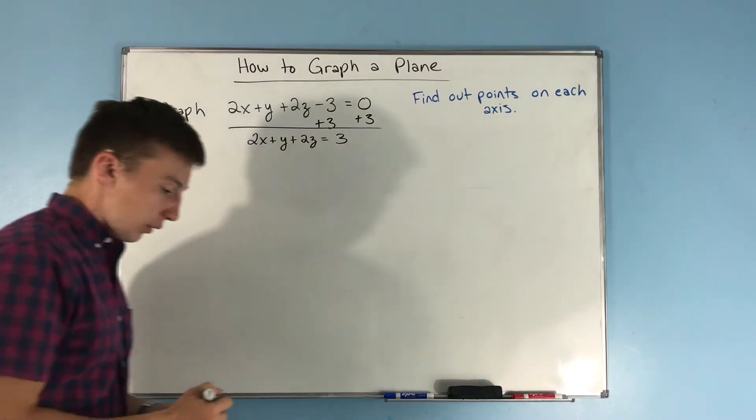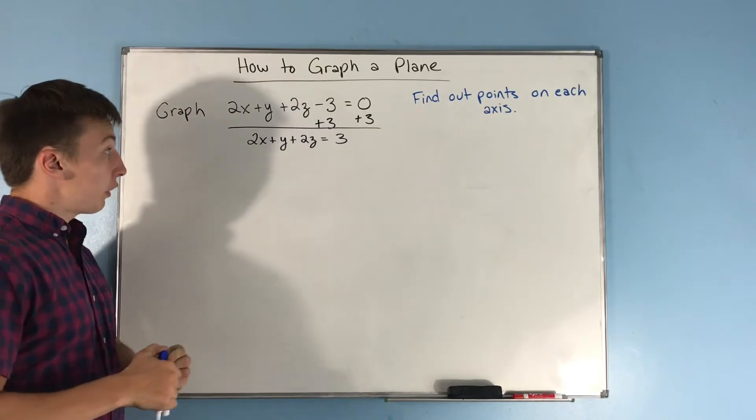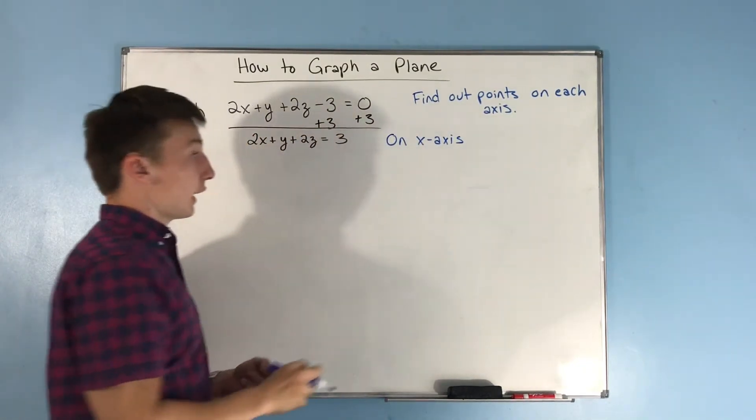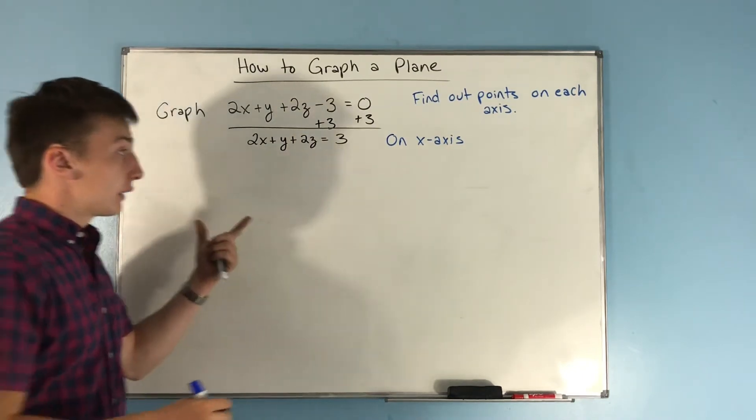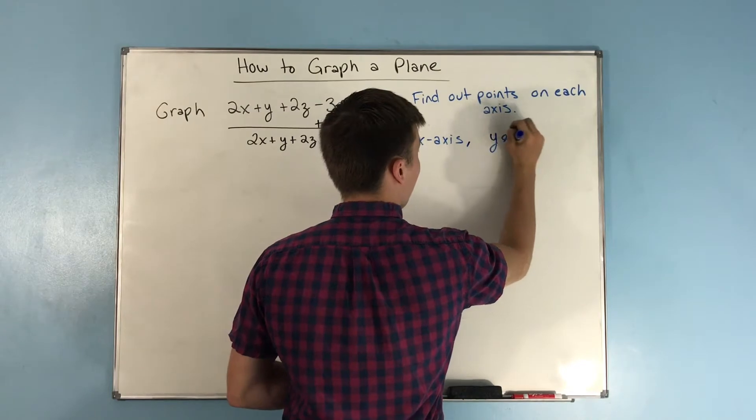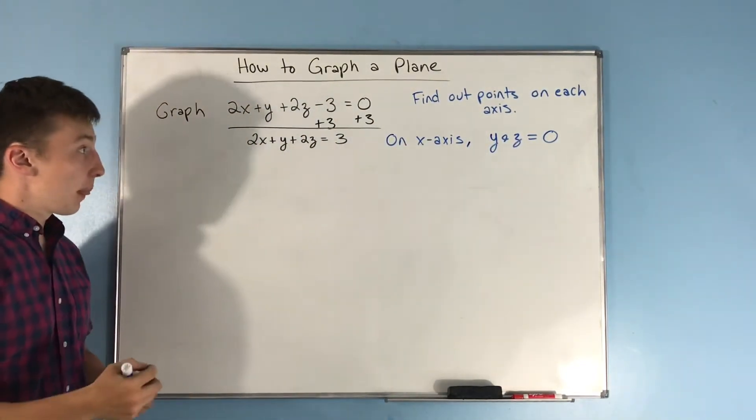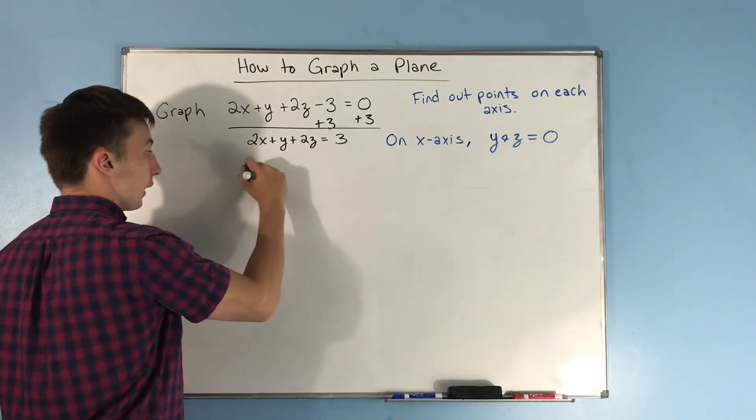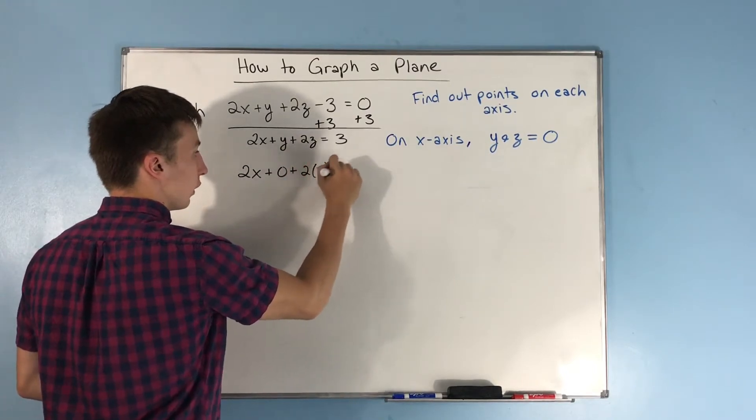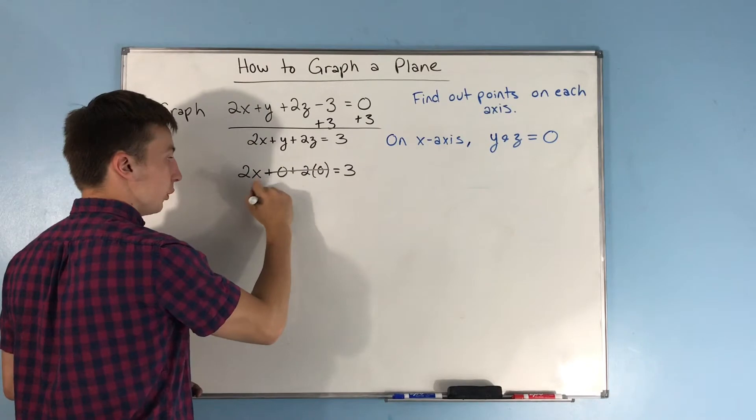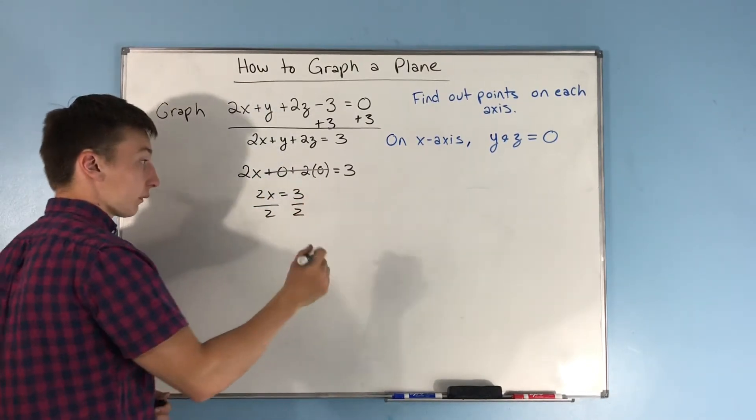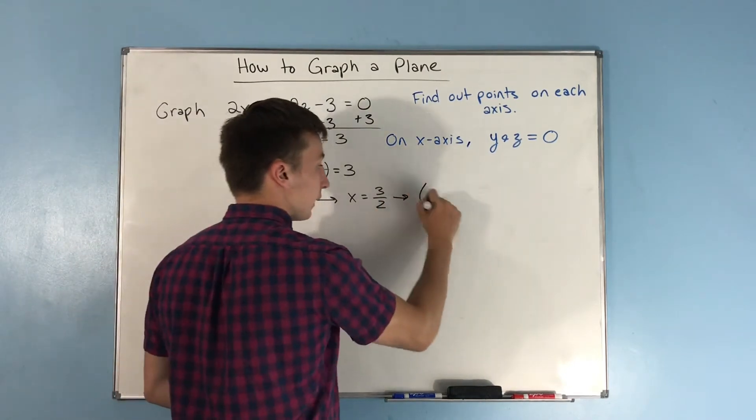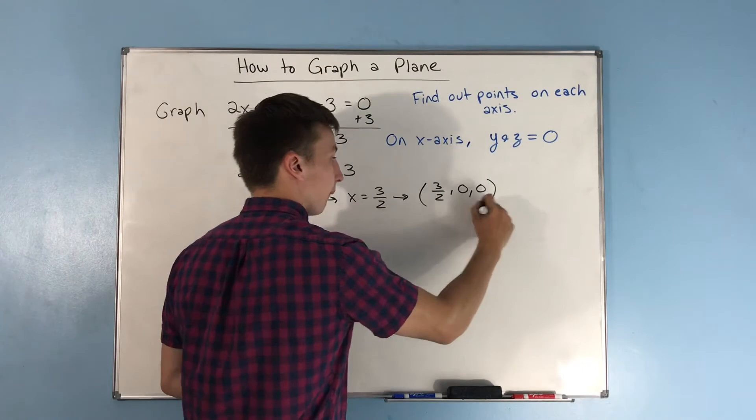Now, the first thing that we're going to want to do is find a point on the x-axis. This plane is going to cross the x-axis at some point, and on the x-axis we know that y and z equals 0. So let's plug in 0 for y and z. If we do that, we get 2x plus 0 plus 2 times 0 equals 3, so we get that 2x equals 3, divide by 2, we get x is equal to 3 halves. So what that means is we have the point (3/2, 0, 0), and that is on our plane.